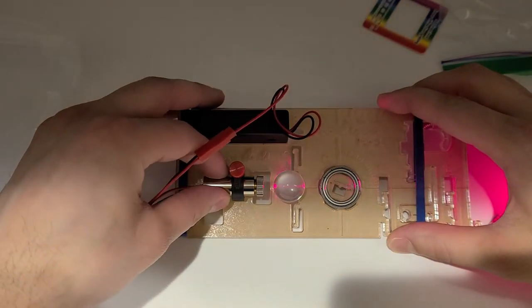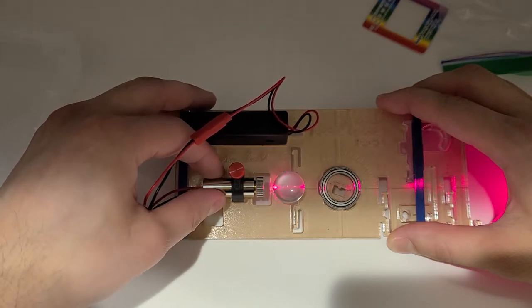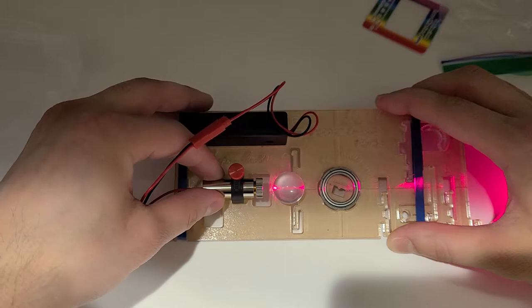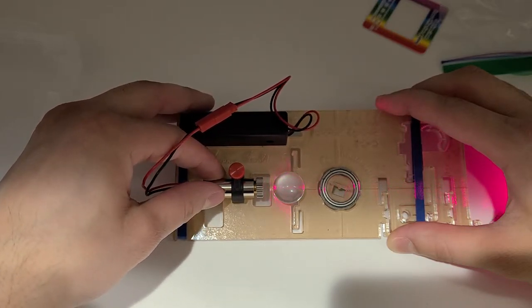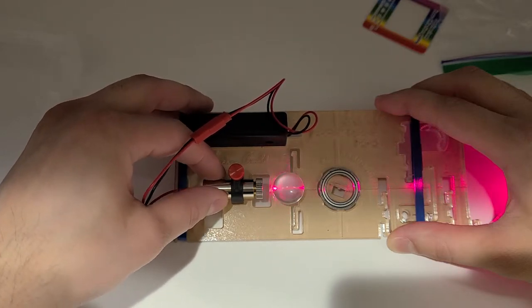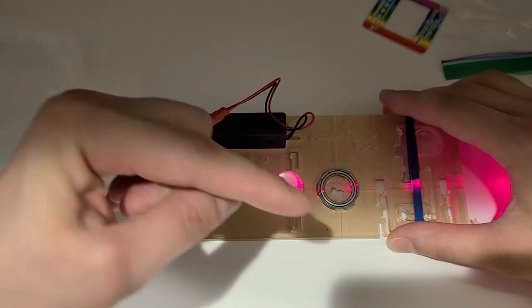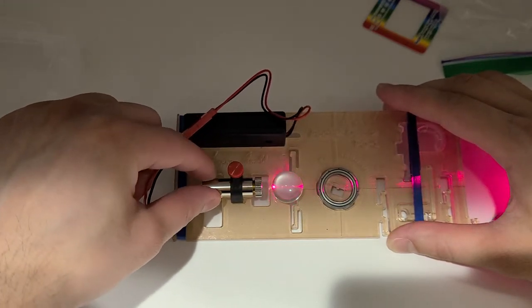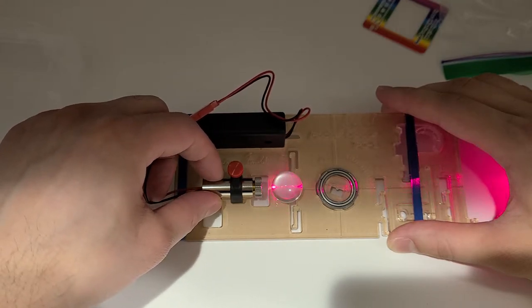It depends on the laser polarization. I'm rotating the laser pointer which is highly polarized, so as I rotate the laser I'm changing the polarization. As you change the polarization, you can see that the scattering coming off the sphere increases or decreases, which is dependent on the laser polarization.